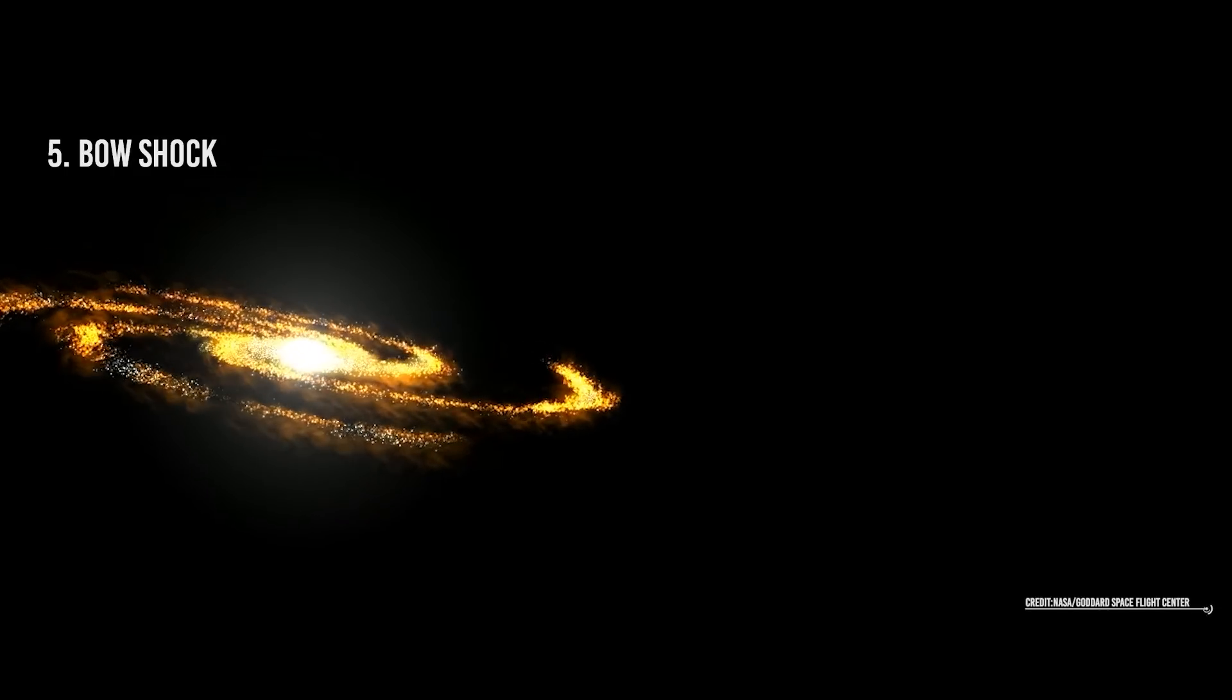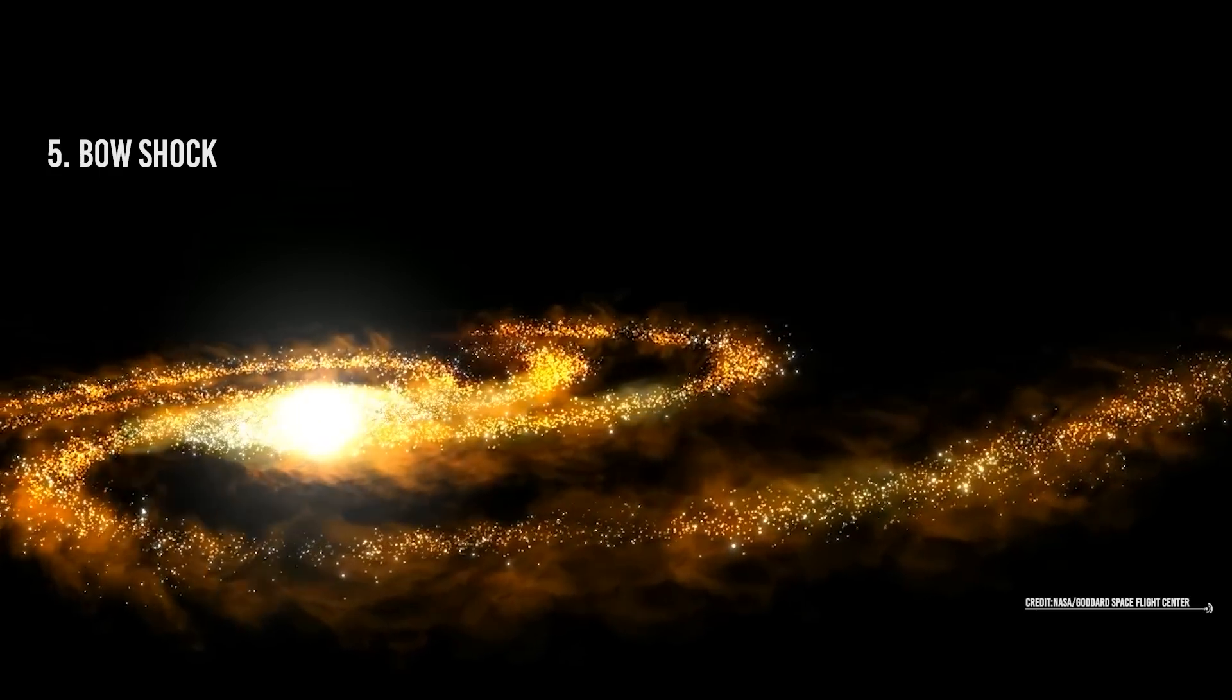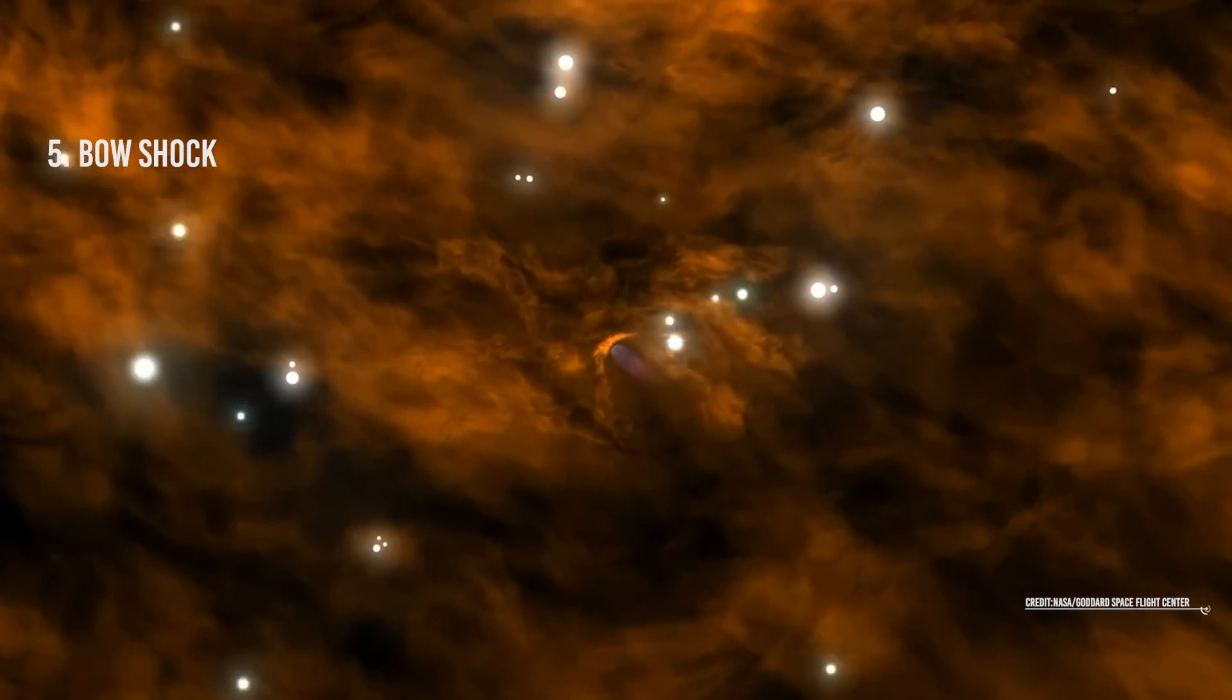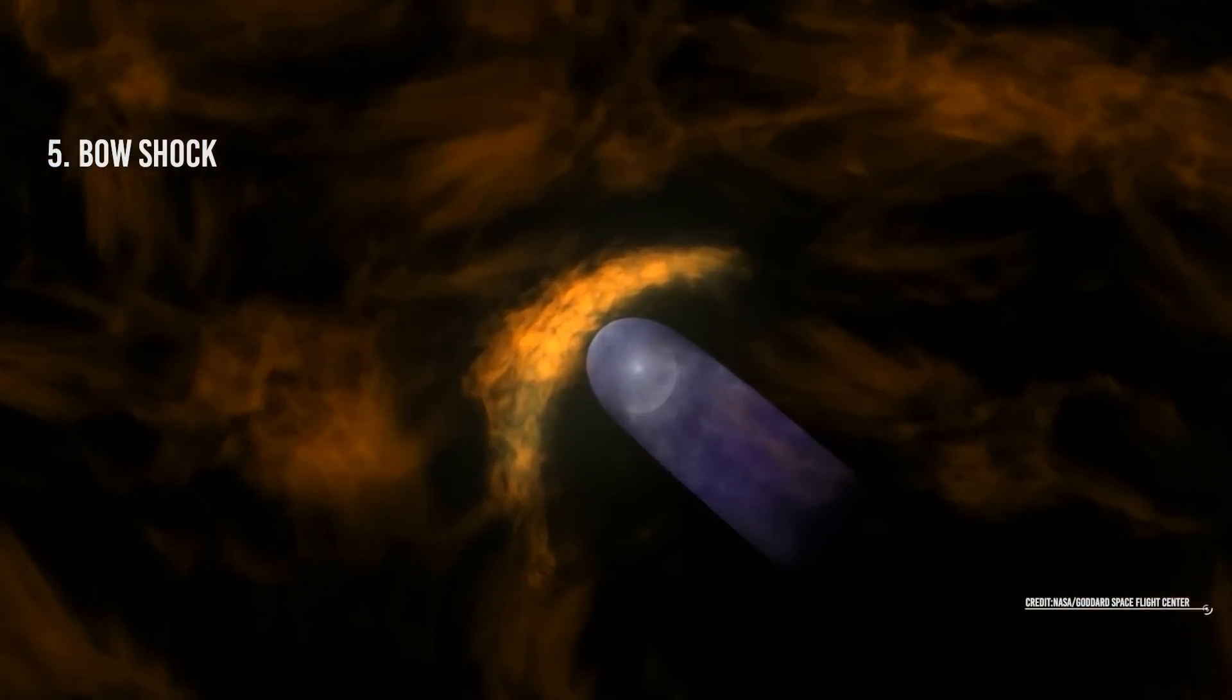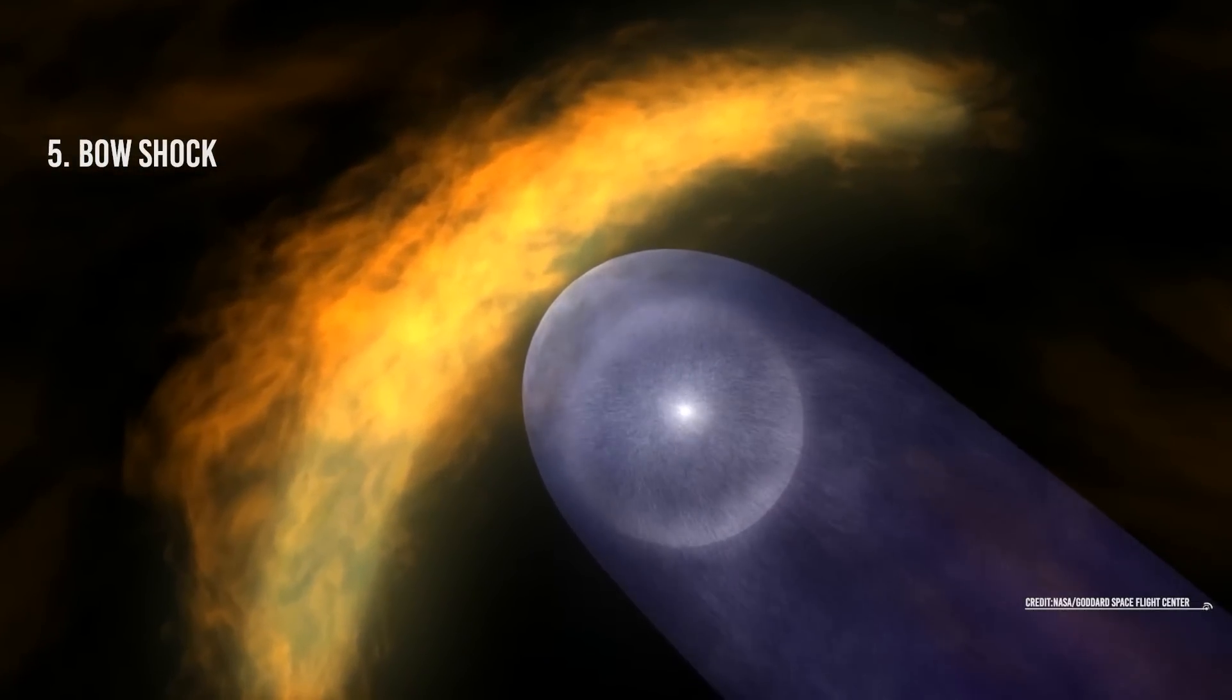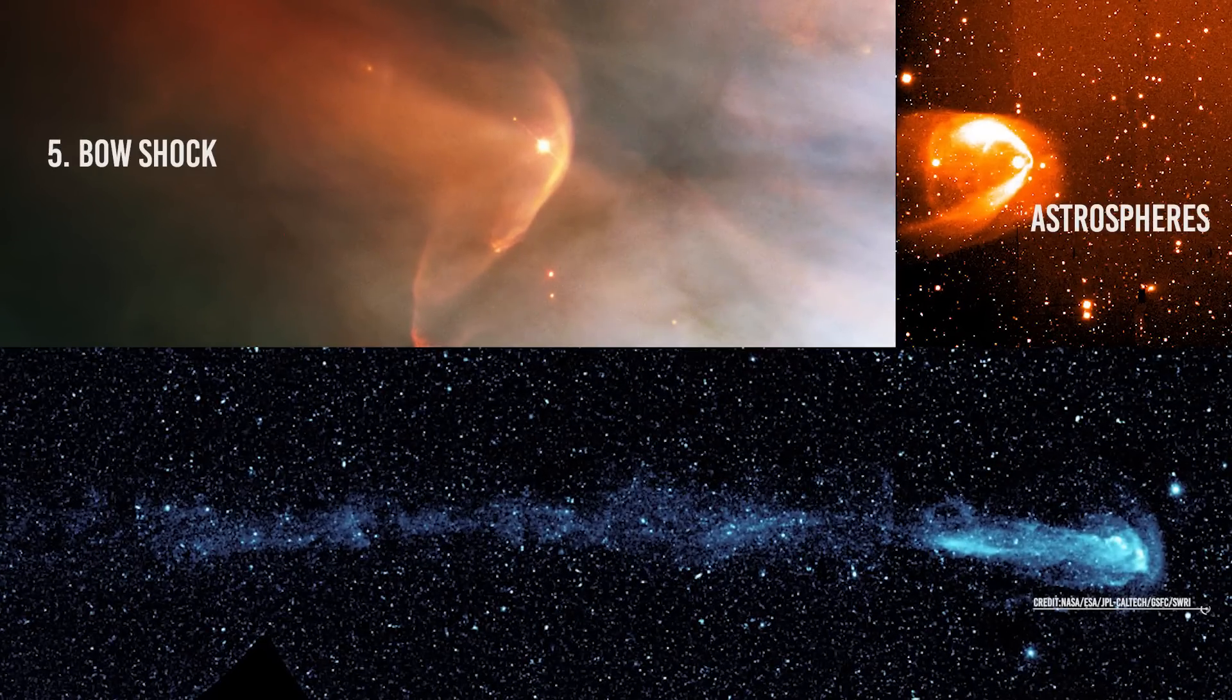Next, we have the bow shock. Just as there is an area where the solar wind ends, there is a region where the solar radiation is entirely no longer felt and begins to dominate the radiation coming from the interstellar medium. This region is known as bow shock and is an arc-shaped region that extends to the front of the solar system as it travels around the galaxy. All stars are thought to have a bow shock that extends around each star, giving them an elongated shape like a comet.